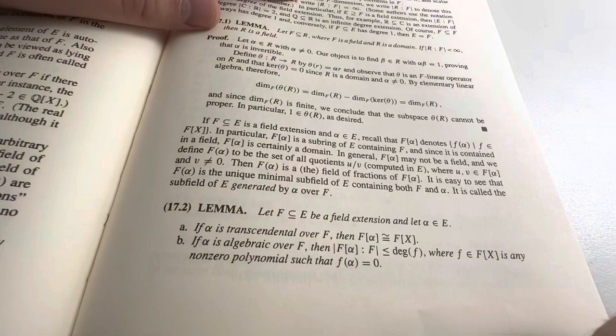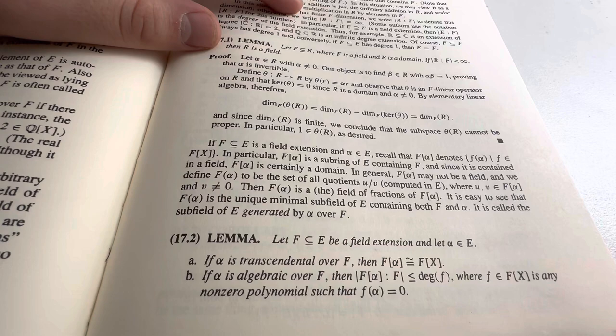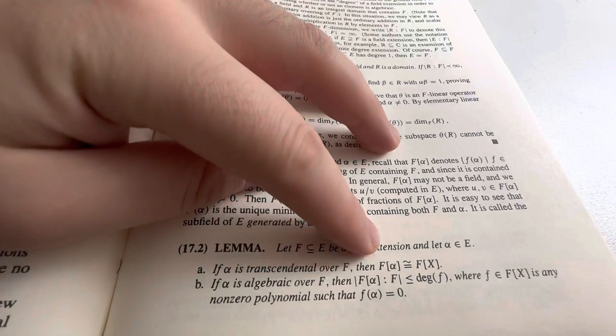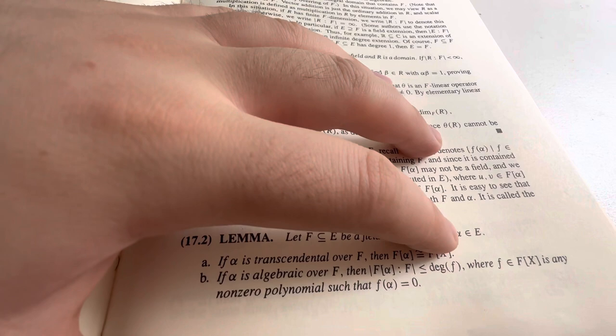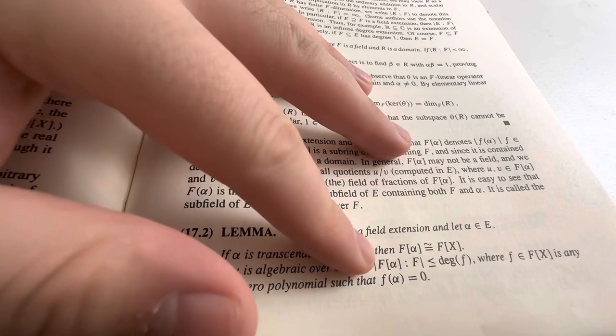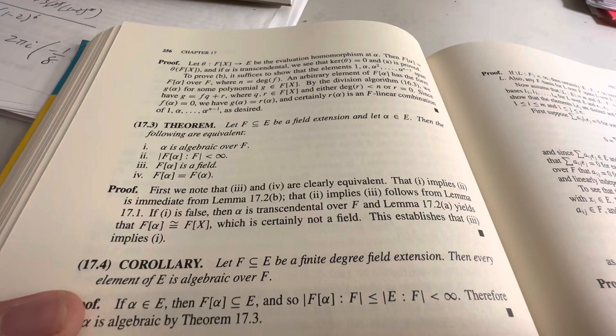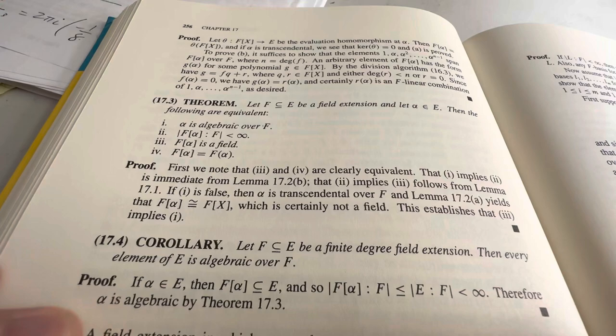Alpha is transcendental over F if F-alpha is isomorphic to F[X]. Alpha is algebraic over F. Then the dimension of F-alpha over F is less than or equal to the degree of F. Such that F is a non-zero polynomial with root at alpha. Okay. So, that makes sense. Because the function, or not the function, but the polynomial may not be, you know, what is it, monic irreducible?